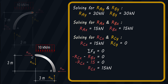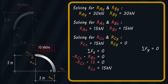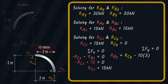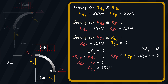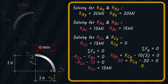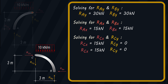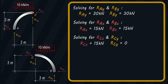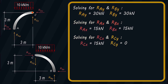To check for RCY, we'll sum the forces along the Y axis, which should be equal to zero. We have: RBY plus RCY minus 10 times 3 equals zero. Substituting RBY equal to 30 kN and solving for RCY, we get the result equal to zero. The results are the same, therefore RCX and RCY are indeed equal to 15 kN and 0 kN respectively.